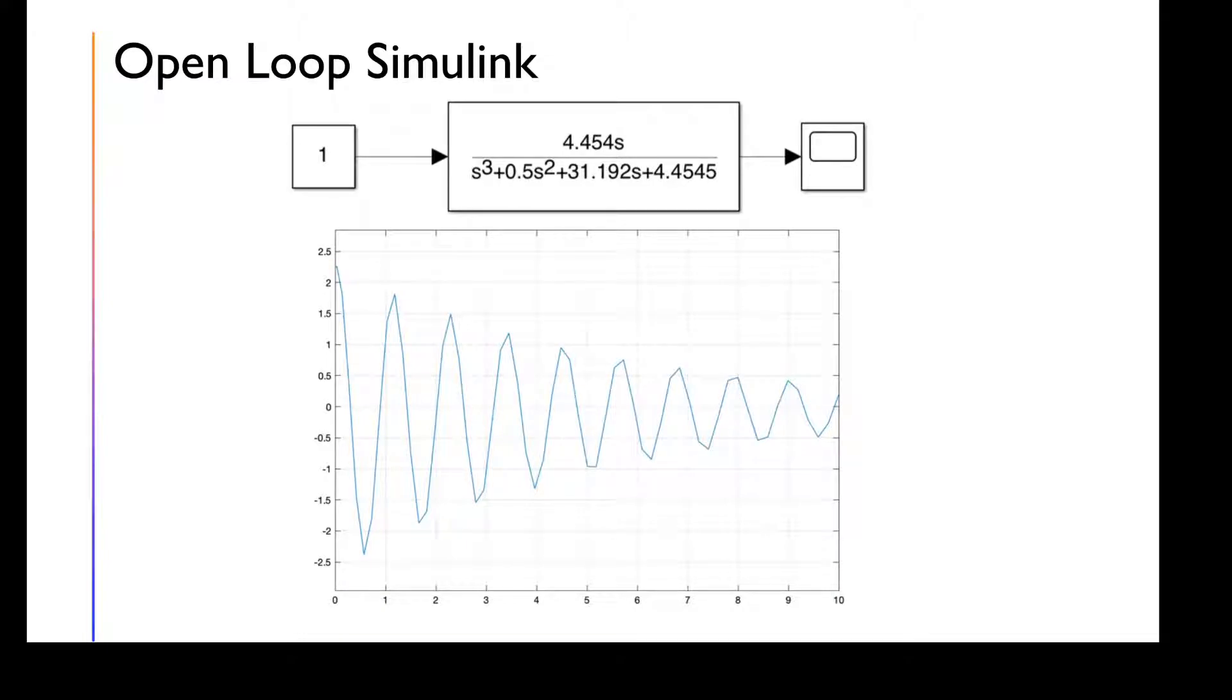Here in Simulink, we used the transfer function hooked up to a constant, then to a scope to see what reaction we get. Below the graph, we get this type of reaction. You can see it begins to settle, and especially if given enough time, it will definitely settle as it's trending downwards towards zero.